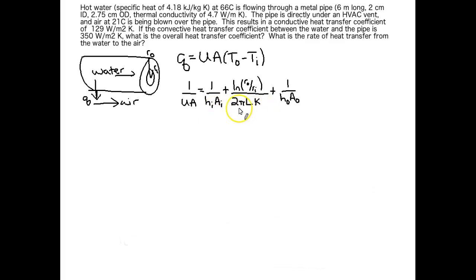This middle term here, with the natural log, is the term for the conductive heat transfer through the pipe, from the inside wall to the outside wall. This third term is the convective heat transfer between the outside of the pipe and the air, and that's where the subscript O's come from. So this is pipe wall to air.